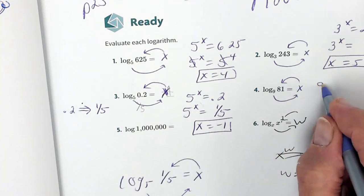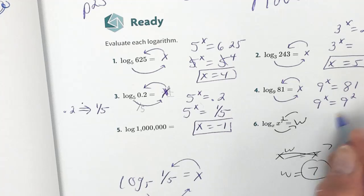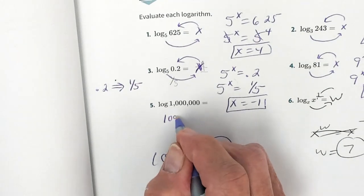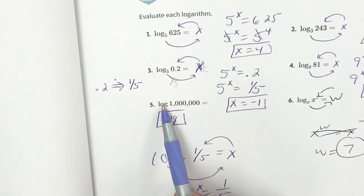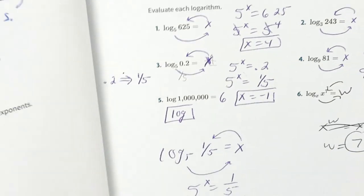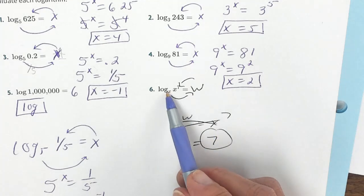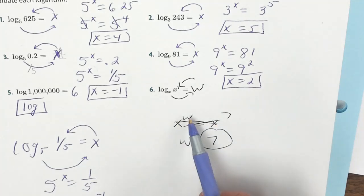Here: 9 to what power equals 81? Well, 81 is 9 squared, so x equals 2. This one you can use your log key on your calculator — this is base 10, so if you hit the word log and type in 1 million, you will get 6. On this one we set it equal to w and did the circle move: x to the w equals x to the 7, so our log equaled 7.